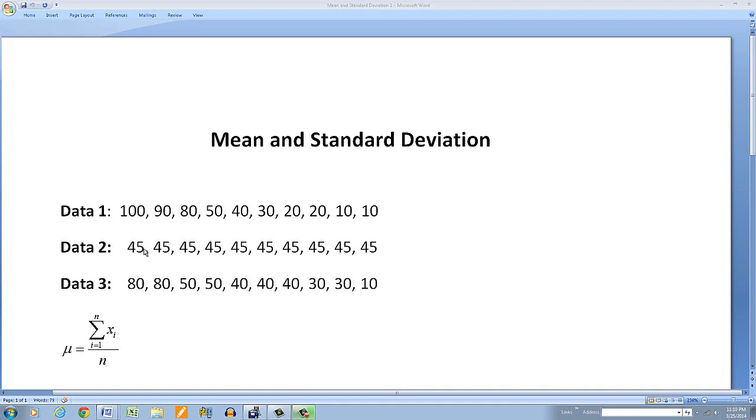If you look at the second set, they're all 45. So obviously the average is going to be 45, or the mean will be 45. If you look at the third set, these add up to 450 also. So divide by 10, you get 45. So they all have the same average.